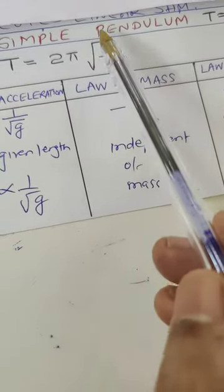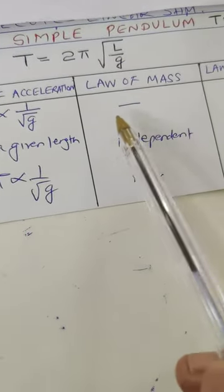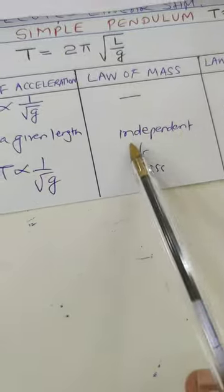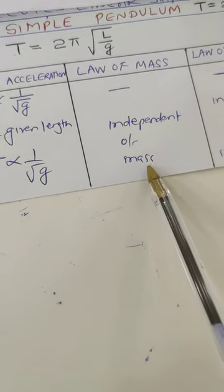Is there any mass here? No. So law of mass: period of simple pendulum is independent of mass of its bob.